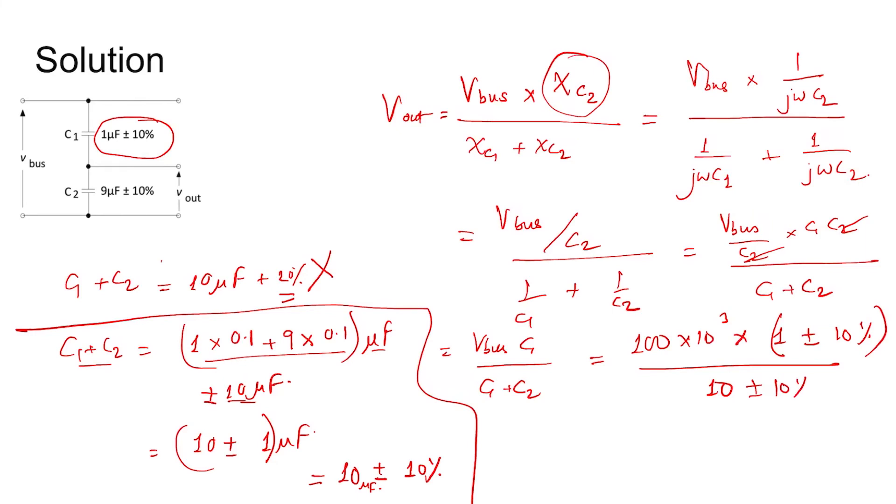This is plus or minus 10 percent. So we find the magnitude, so it is 10 kV plus or minus 20 percent, since relative error gets added during product or division.